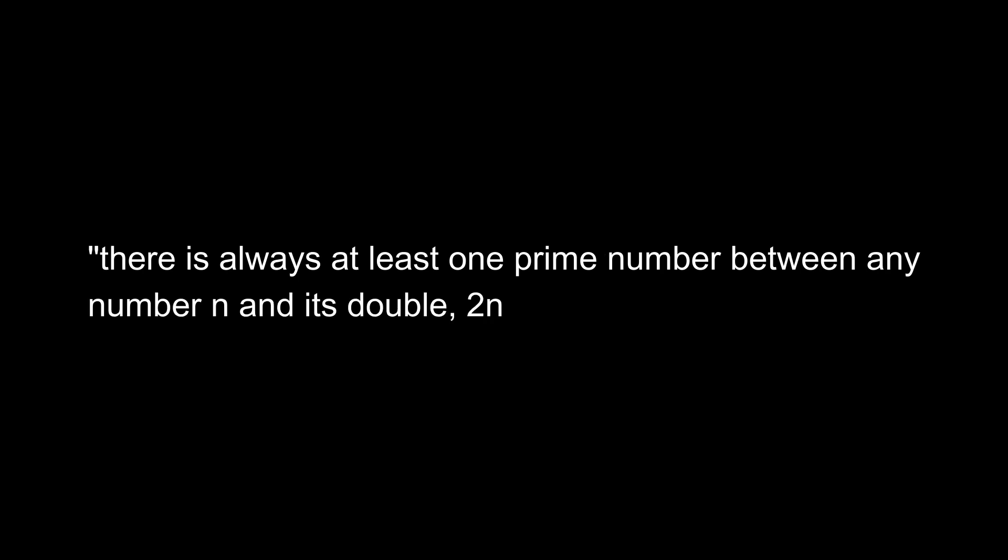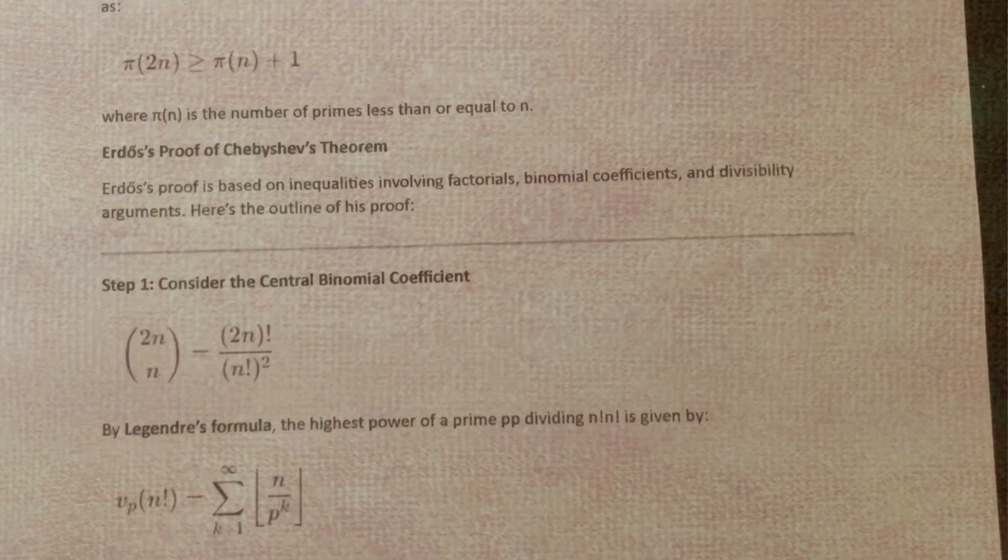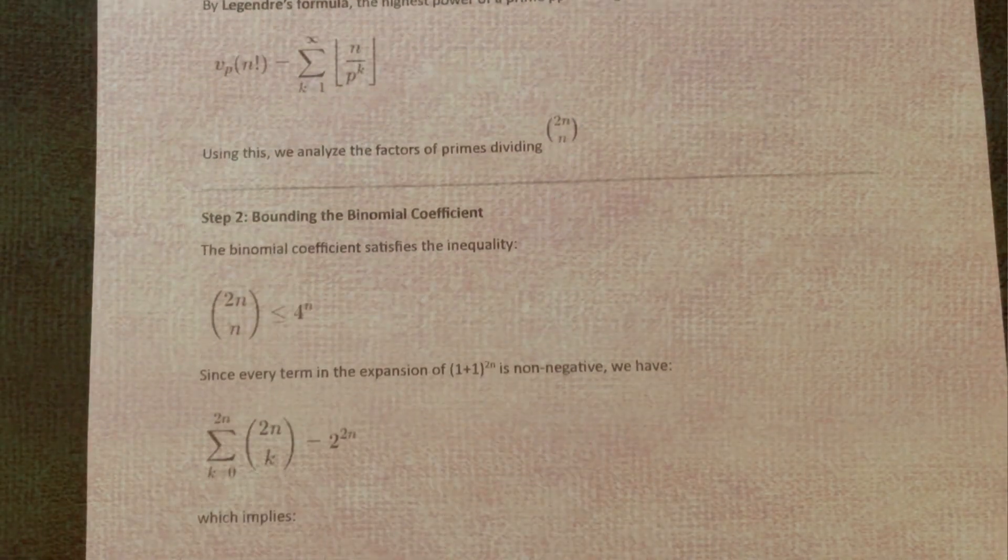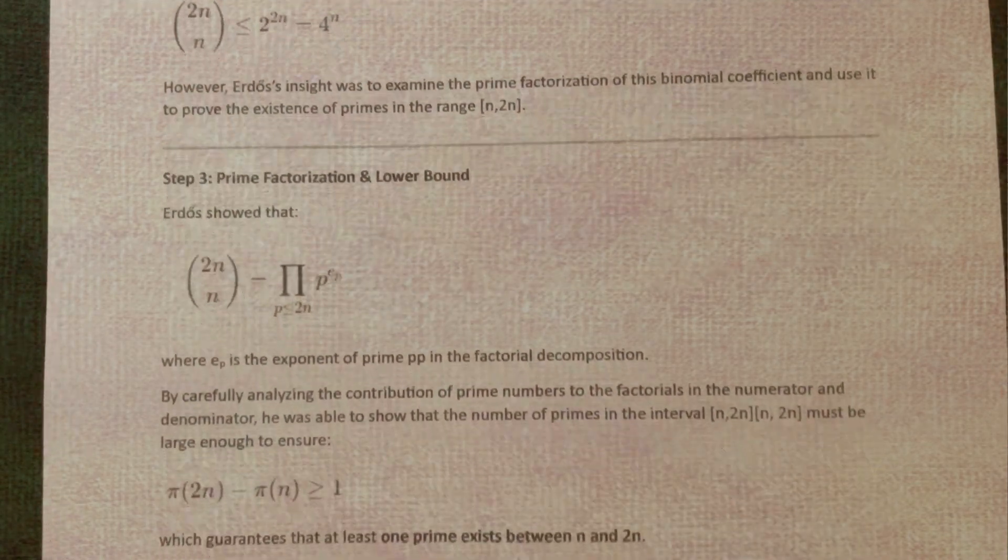The theorem states that there is always at least one prime number between any number n and its double 2n. Sounds simple, right? But proving it? That was the hard part. Many had tried. But Erdos, using his brilliant combinatorial mind, found a proof so elegant and simple that even seasoned mathematicians were left in awe.